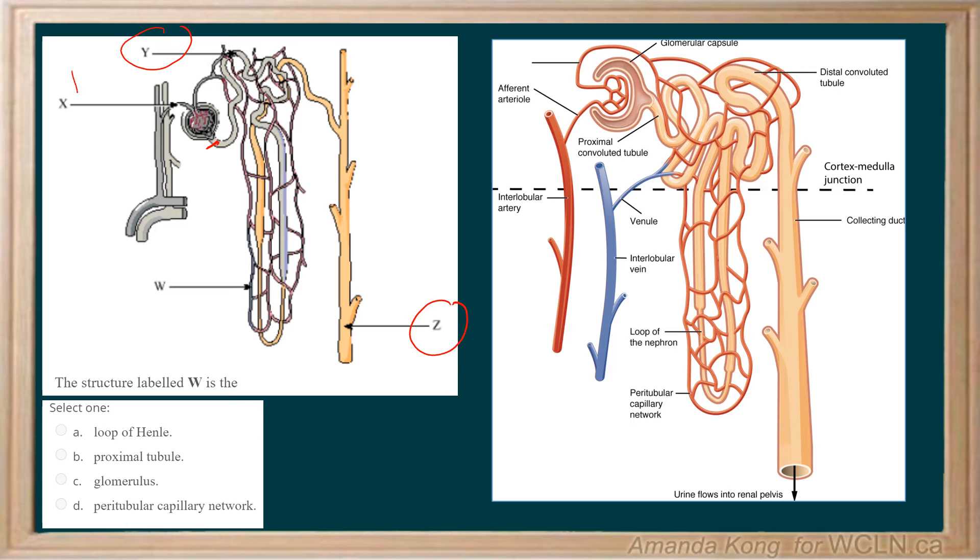So this should be the DCT, which is the distal convoluted tubule. X would be the glomerulus. And finally, W, as you can see right over here, is the peritubular capillary network. So the answer is D, peritubular capillary network.